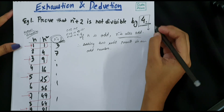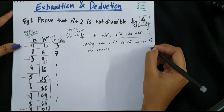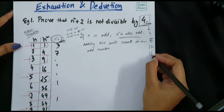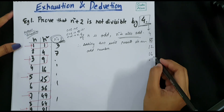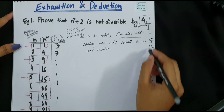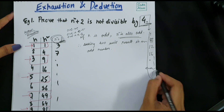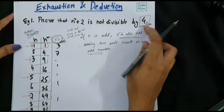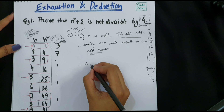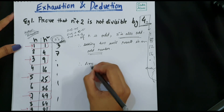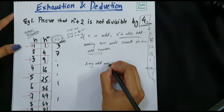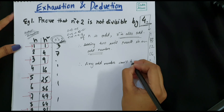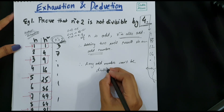Since 4 is an even number and a multiple of 2, and the multiples of 4 — 4, 8, 12, 16 — are always even, any odd number cannot be divisible by 4. Therefore we can say any odd number cannot be divisible by 4.